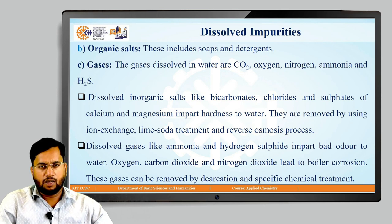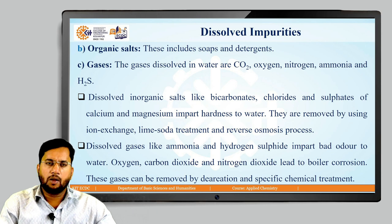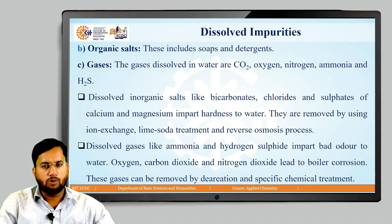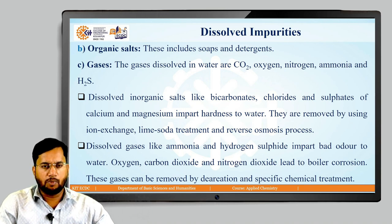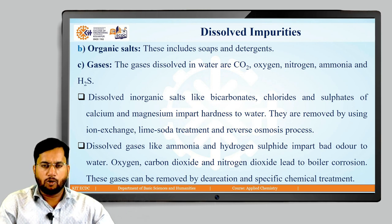However, dissolved gases like ammonia and hydrogen sulfide impart bad odour to water, whereas oxygen, carbon dioxide, and nitrogen dioxide lead to boiler corrosion, as they have strong affinity towards metal and can corrode metallic material. Dissolved gases can be removed by de-aeration and specific chemical treatment, if boiling is not suitable.